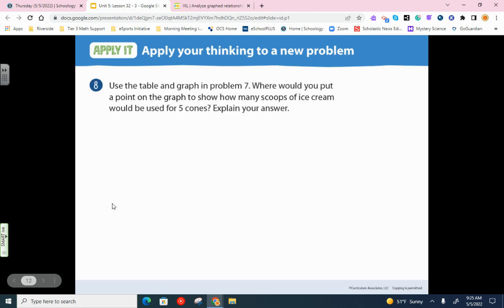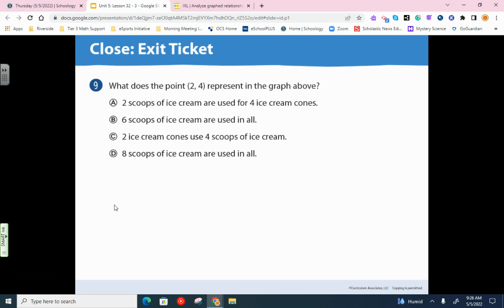Question eight, use the table and graph in problem seven. Where would you put a point on the graph to show how many scoops of ice cream would be used for five cones? That's easy to be five cones would be 10 scoops. Five cones equals 10 scoops. So basically, you would just go one additional spot. And this last question, multiple choice. What does point 2, 4 represent on the graph above? Well, we know the two for the x are cones. And if you look where it lines up with the y, it means four scoops of ice cream. So that is letter C. So not too difficult. But it's a really great warm-up to get you ready for today's IXL.